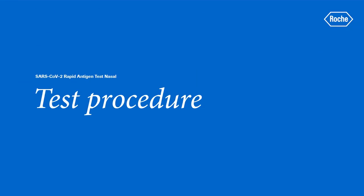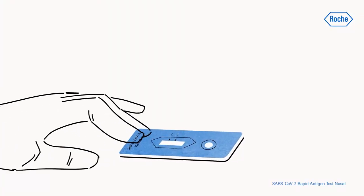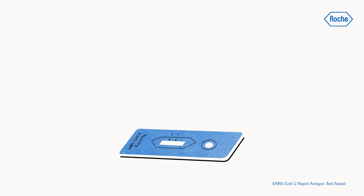Here's how to proceed with the sample. Place the test device on a flat surface. Turn the tube and apply four drops of extracted sample at a 90 degree angle to the specimen well of the test device.